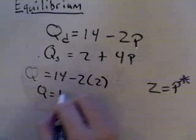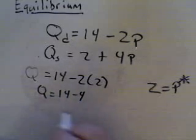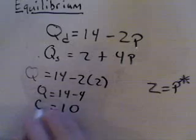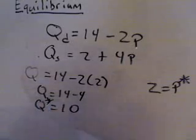Which leaves me with my quantity equals 14 minus 4, which is going to simplify to 10. And this is our quantity demanded at equilibrium.